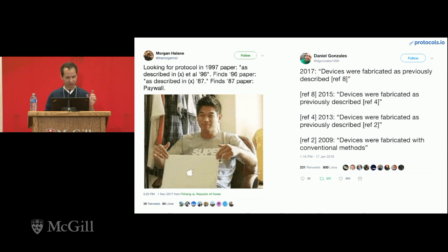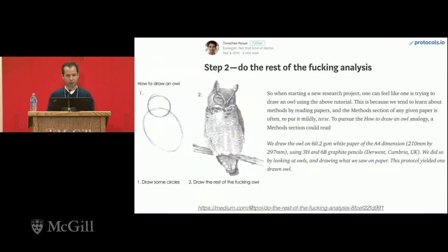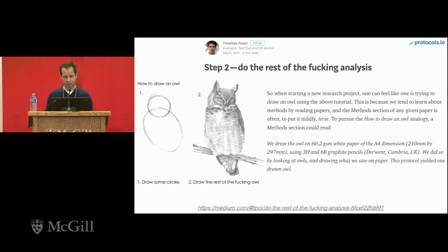It's a little bit tricky. My favorite blog post on this is from Professor Timothy Poisson at the University of Montreal. He has a post which says our method sections are essentially "how to draw the owl." He says we learn about methods by reading papers, and the method section of any given paper is often, to put it mildly, terse. A traditional method section would be something like: "We draw the owl on 60.2 GSM white paper of A4 dimension using 3H and 6B graphite pencils. We did so by looking at owls and drawing what we saw on paper. This protocol yielded one drawn owl." A really excellent summary of what a common method section of a research paper is like.